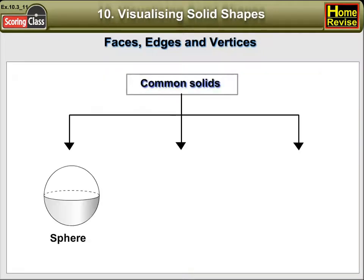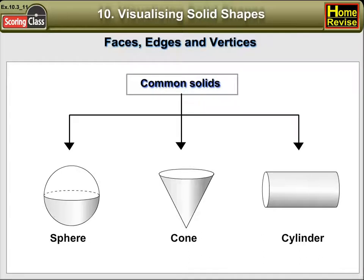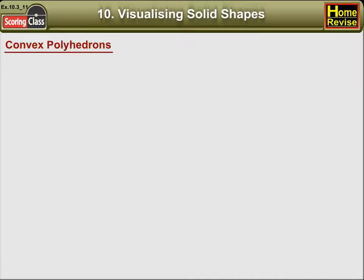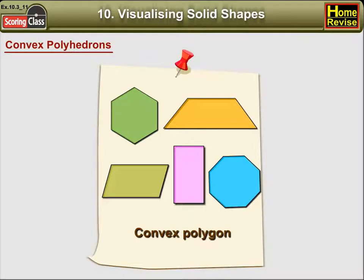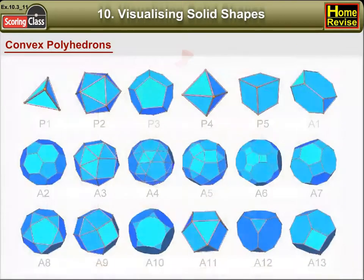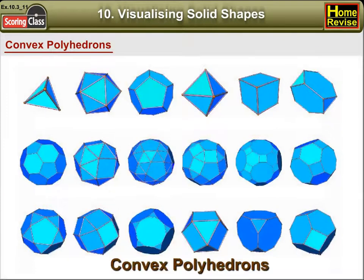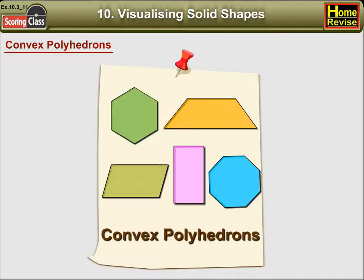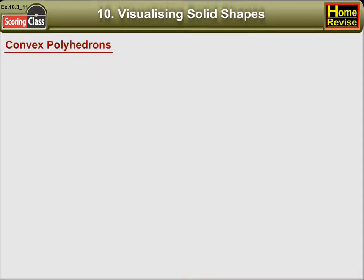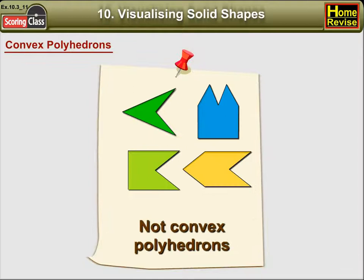You know three other types of common solids. Convex polyhedron: you can recall the concept of convex polygon. The idea of convex polyhedron is similar. These are convex polyhedrons. These are not convex polyhedrons.